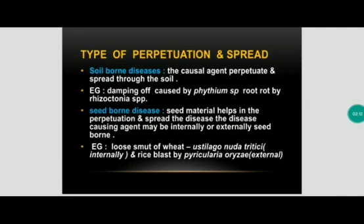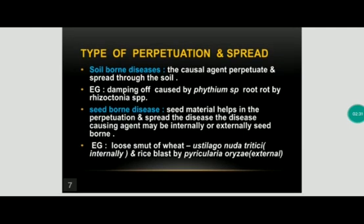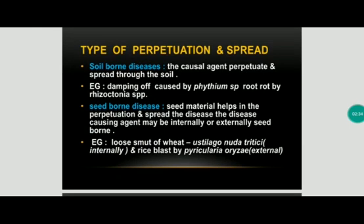Type of perpetuation and spread — in this we have three categories: soil-borne disease, seed-borne disease, and air-borne disease. In soil-borne disease, the disease spreads and penetrates through the soil and multiplies in the soil. Example: damping off caused by Pythium, then root rot caused by Rhizoctonia.